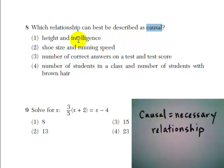If we look at answer choice one, height and intelligence, well, height is not necessarily related to intelligence, right? There are smart people who are very tall, there are smart people who are very short, and there are smart people who are average height.